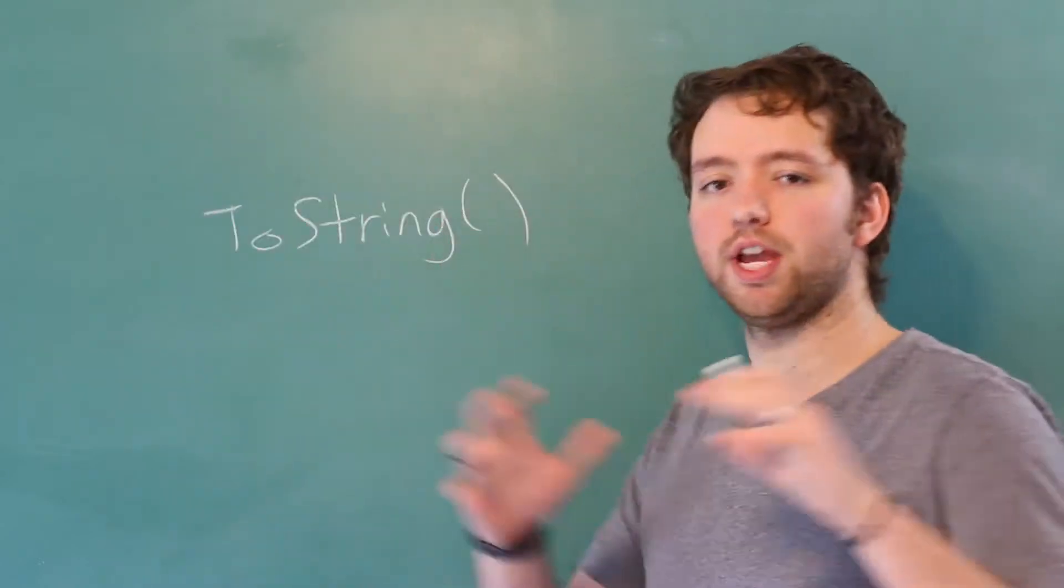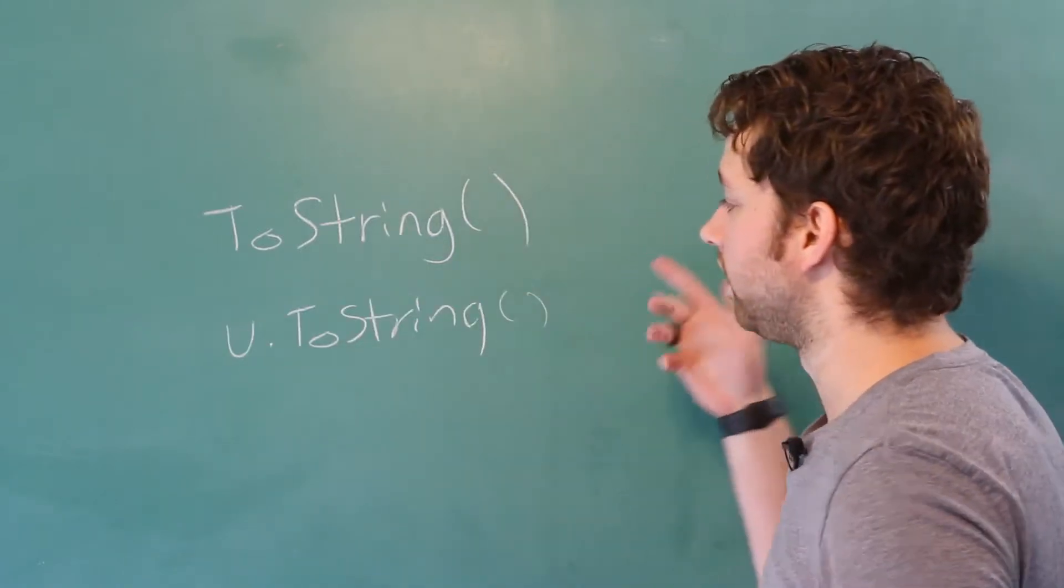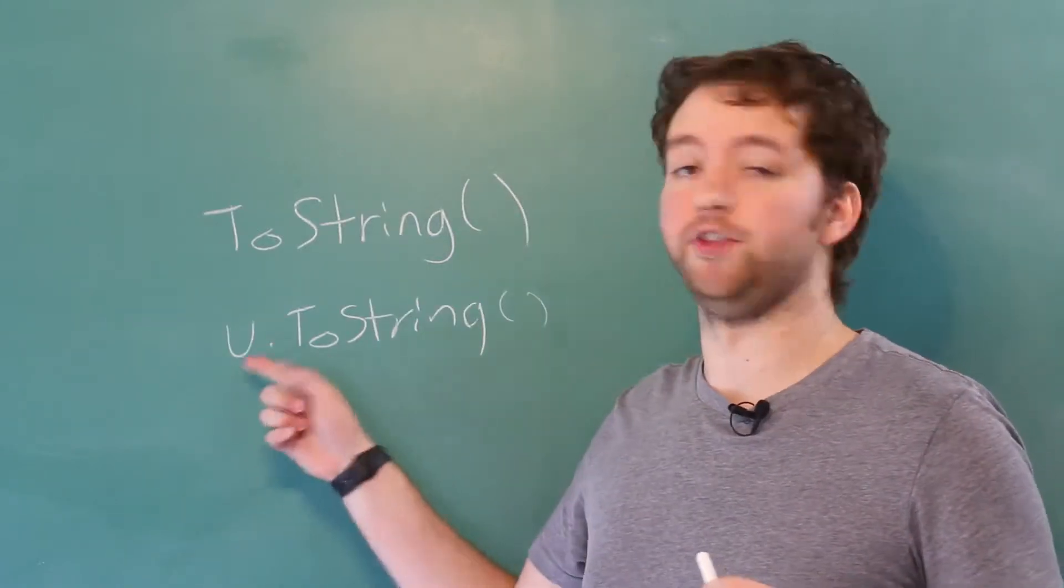So for example, if we're working with a class, there is a method toString. And you can use any custom object and you can always call dot toString. This is going to return some string representation of this object.